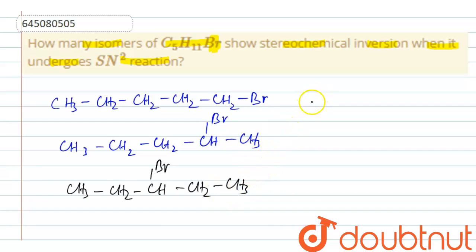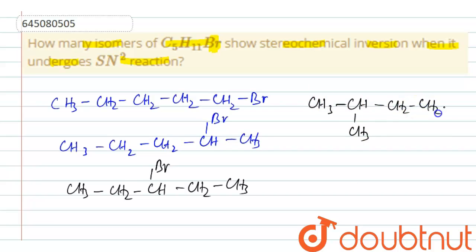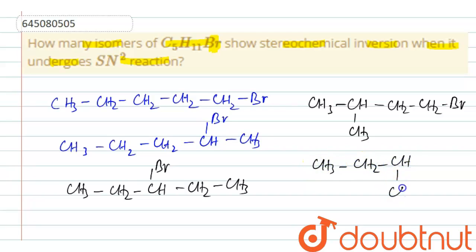Now let us draw the branched-chain isomers. We can write: (CH3)2CH-CH2-CH2Br (1-bromo-3-methylbutane), and then CH3-CH2-CH(CH3)-CH2Br (another branched isomer).